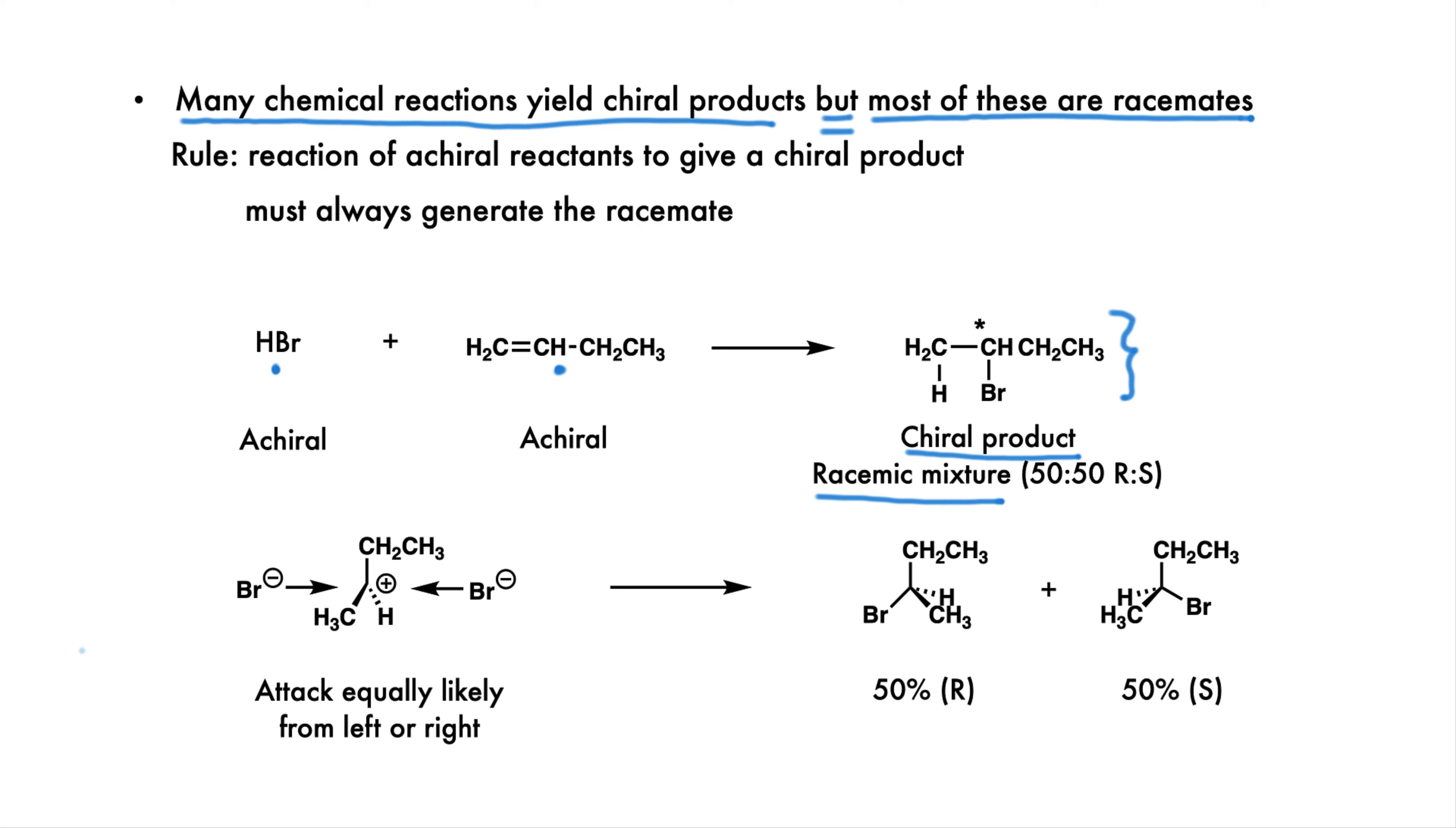Why do we get the racemate? We need to look at the mechanism of the reaction, that is, how the reaction occurs. The chirality center is made in the second step of the reaction. A carbocation is attacked by bromide. It can be attacked from the left or the right equally as well, so there is an equal chance of getting both the R and the S enantiomer. There is nothing in the mechanism or the carbocation that can bias the reaction towards one enantiomer or the other. In fact, the rule is that a reaction of achiral reagents to give a chiral product must always generate the racemate.